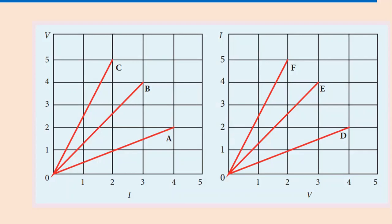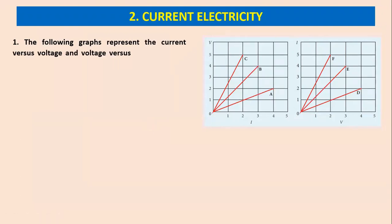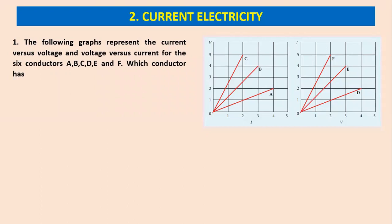Up to F is given for different materials. The following graphs represent the current versus voltage and voltage versus current for the six conductors A, B, C, D, E, and F. Which conductor has the least resistance and which has the maximum resistance?